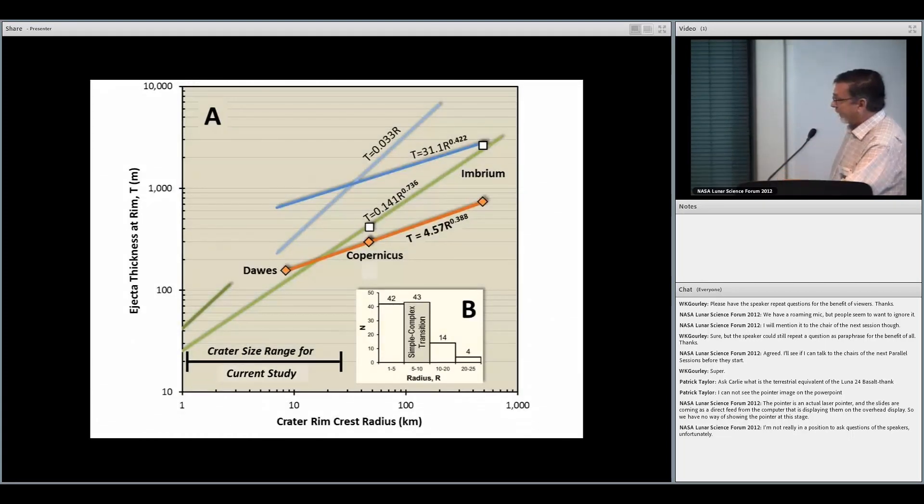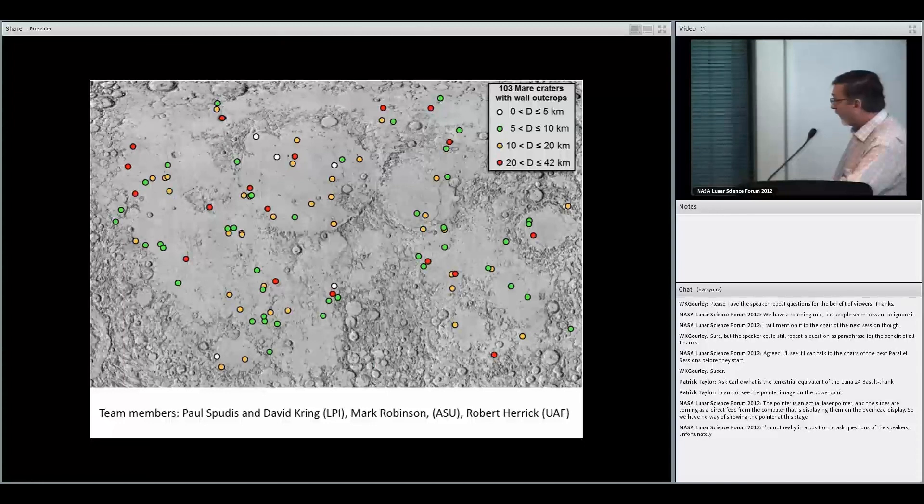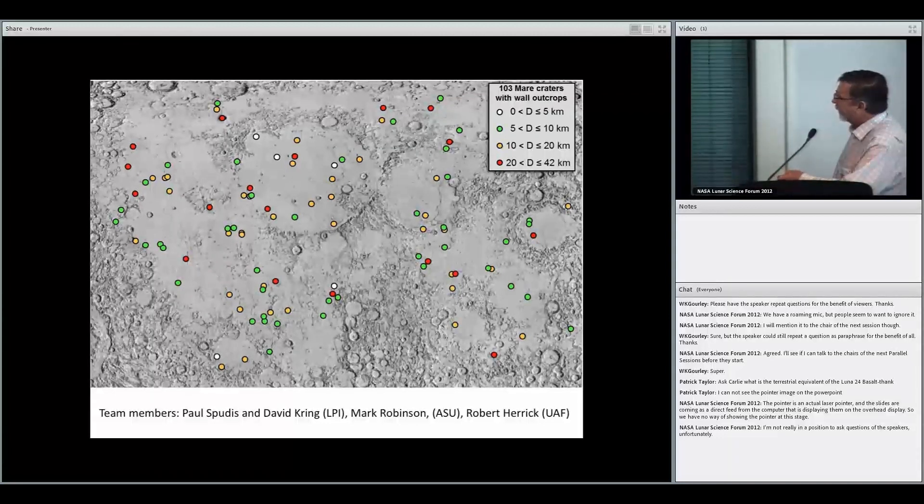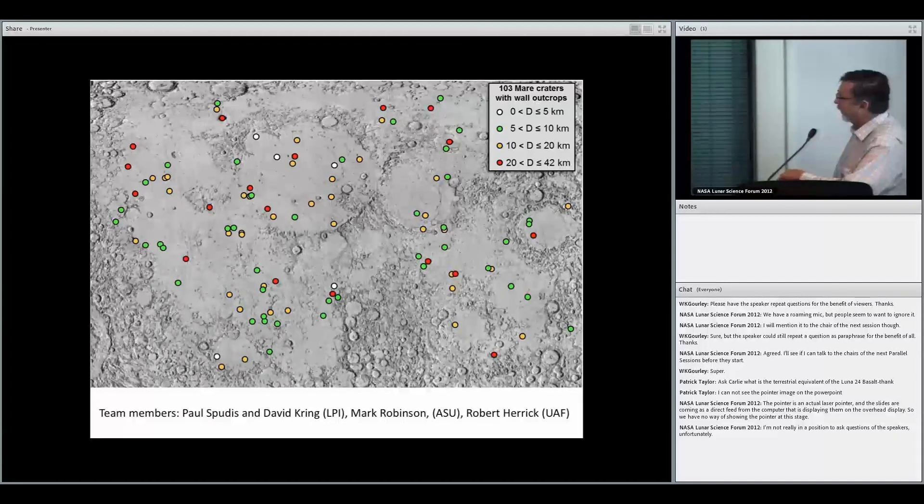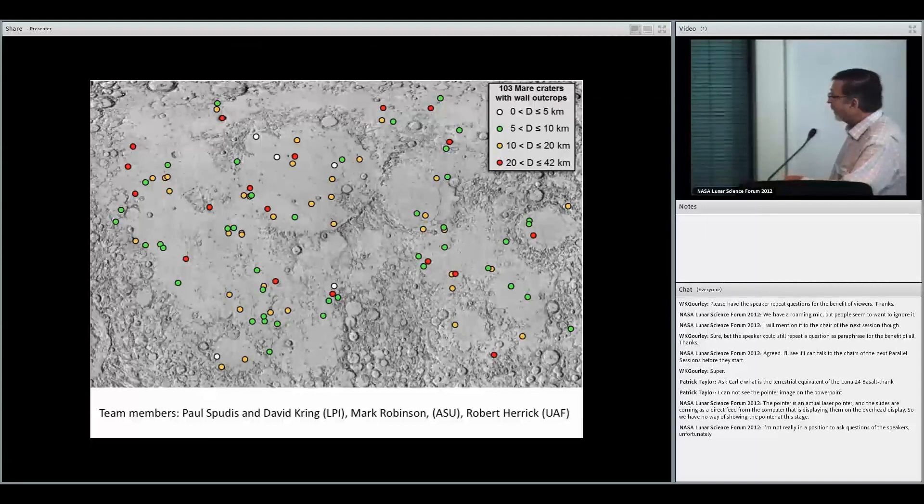Obviously, you have serious problems when you're taking one data point and extrapolating it now over two orders of magnitude. And so, we've begun, with my colleagues, an analysis of a number of craters that extend from 2 kilometers to about 45 kilometers. All mare craters, located right here. And I'd just like to acknowledge my team members, Paul Spudis, David Kring from LPI, Mark Robinson and his team, which are instrumental at ASU, and Robbie Herrick at University of Alaska Fairbanks, to try to understand this a little bit more. But this is an ongoing project, and we hope to have a completed project done in about three years.